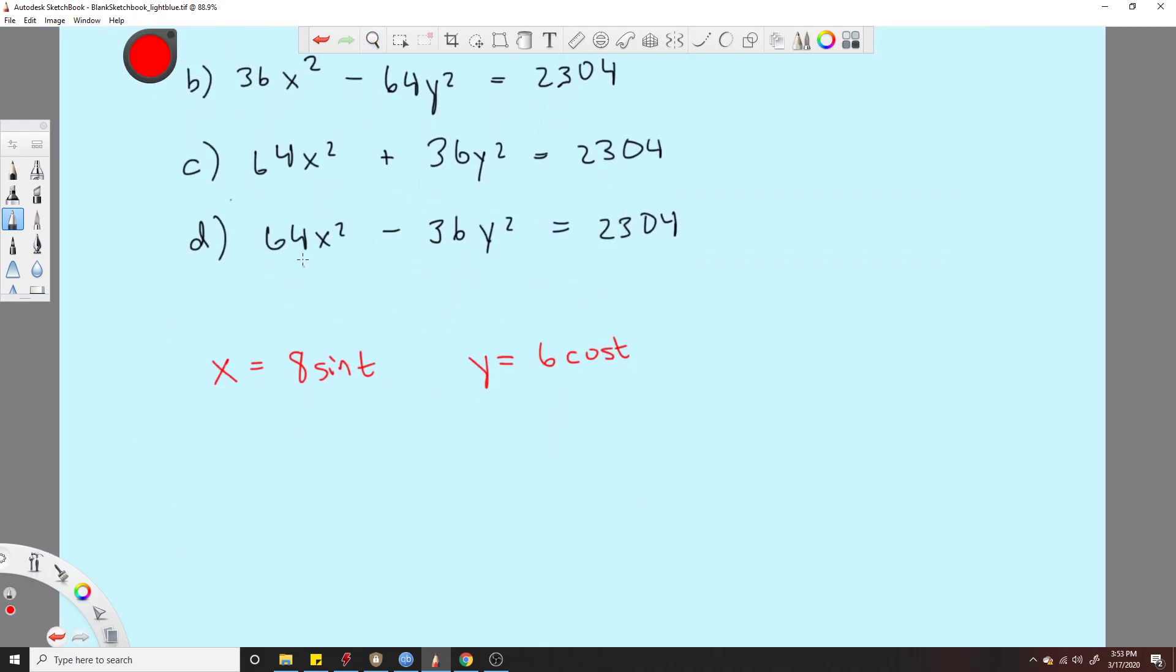So you can kind of tell that there's probably some sort of squaring involved. You see this 8 here, there's 64 there, 6 here, 36 there, so it's a little fishy. You're clearly going to be squaring these coefficients, right? And you also have these trig functions that get eliminated somehow. So you need to think of how to do that.